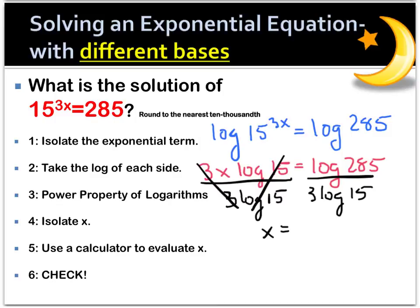So we go ahead, you grab your calculator. We want to do log of 285 divided by 3 times log of 15, rounding to the nearest ten-thousandth. This is going to be 0.6958, and you can go ahead and plug that in and make sure it works.